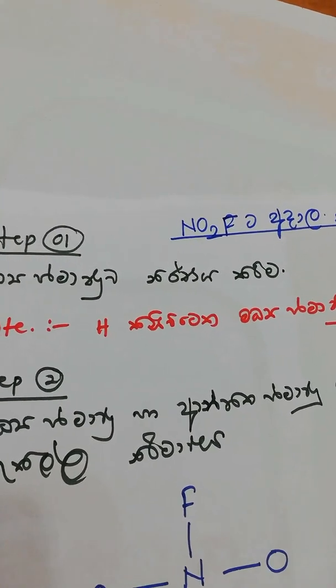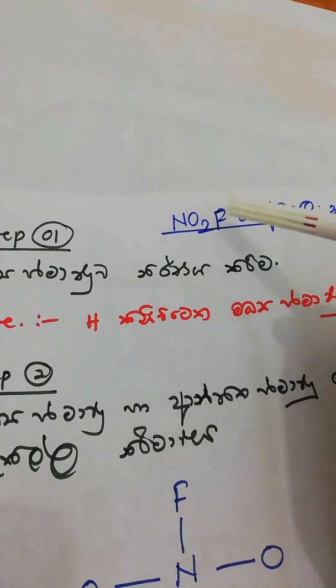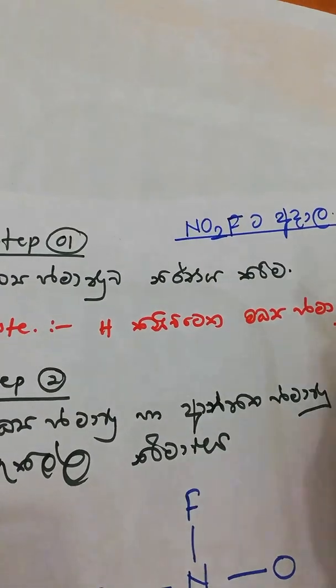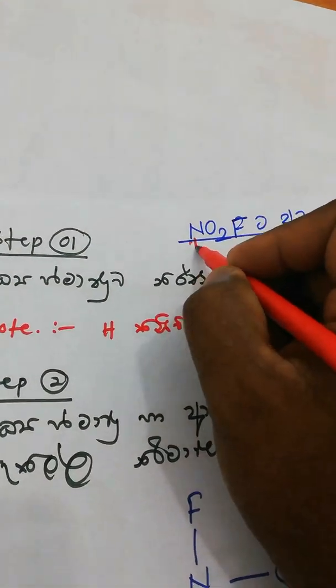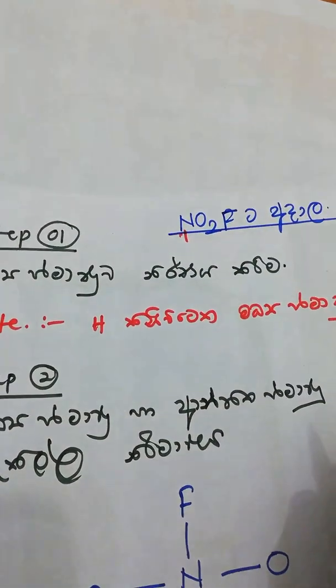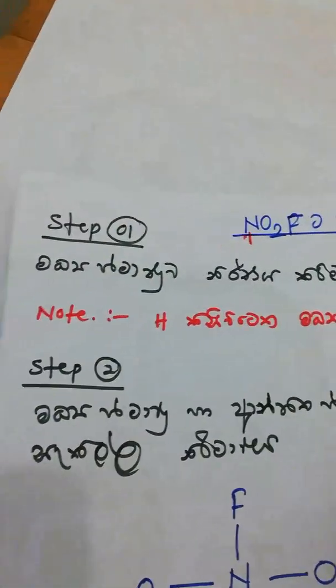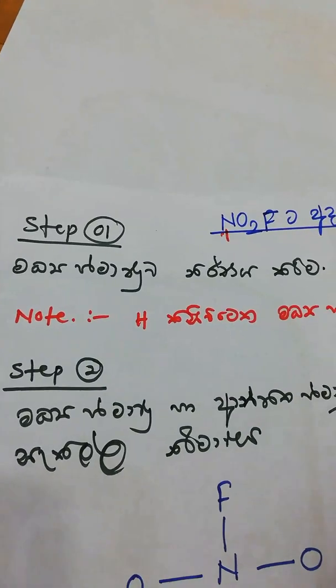After accounting for the atoms, we have nitrogen, oxygen, fluorine, nitrogen, oxygen, fluorine, and oxygen, nitrogen, hydrogen, oxygen, and oxygen. Because of nitrogen, hydrogen is a hydrogen.